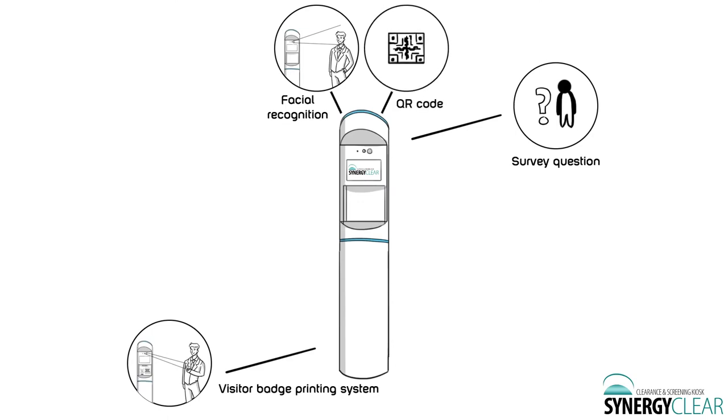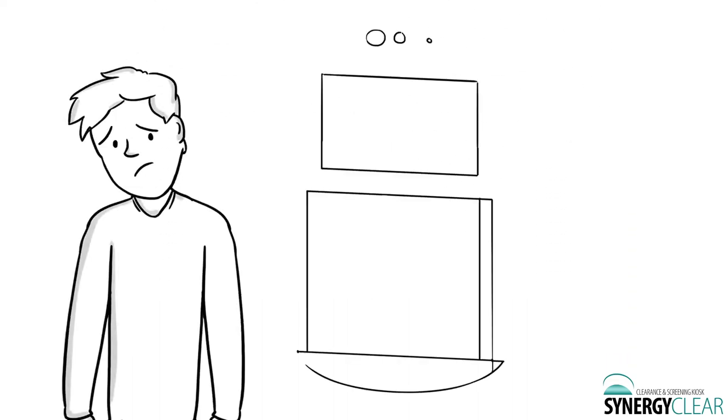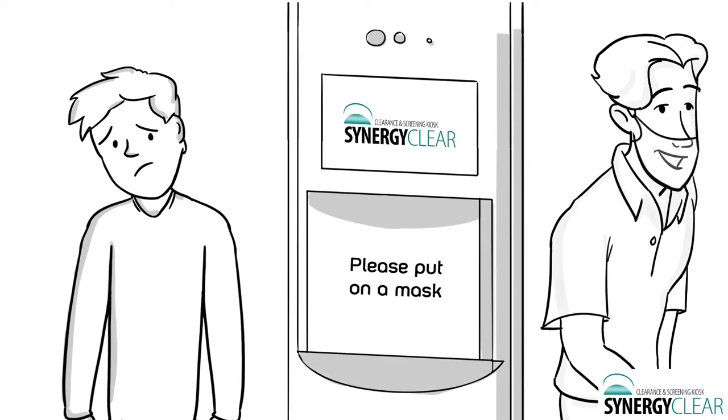Using APIs, Synergy Clear can integrate with time card, HR, VMS systems, and access control systems. Other optional features include mask detection software. Robust facial recognition software can detect if someone is wearing a mask or not.